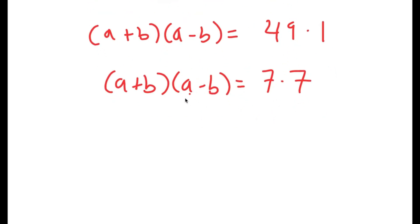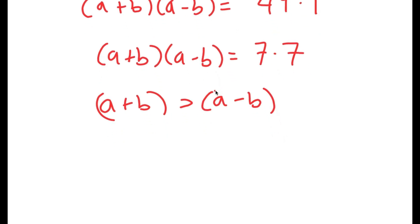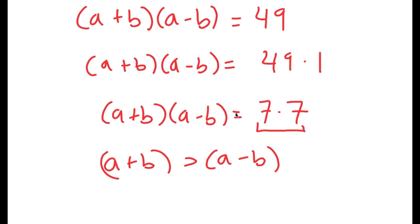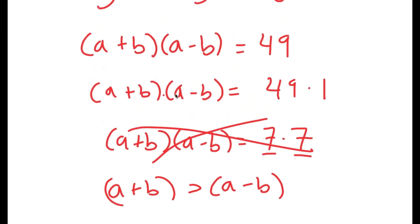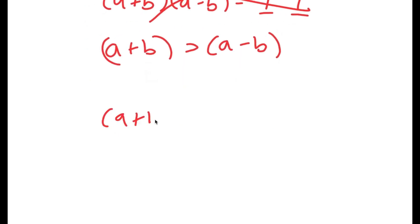We obviously know that a plus b is going to be greater than a minus b. So keeping this in mind, we can't rewrite a plus b times a minus b as 7 times 7, since 7 and 7 are equal. So this possibility is out of the way, and 49 times 1 is the only possibility, meaning a plus b times a minus b equals 49 times 1.